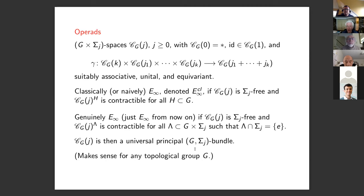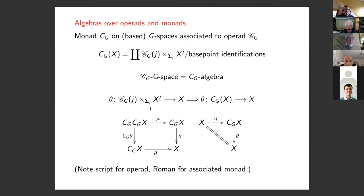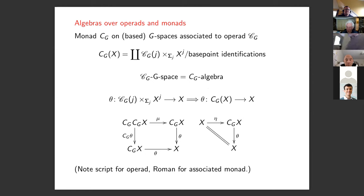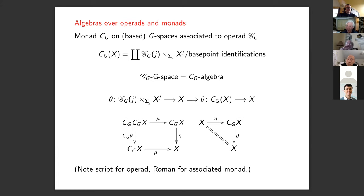This definition makes sense for any topological group G, but we'll restrict to finite groups. We have notions of operads, algebras over them, and monads. There is a monad on based G-spaces associated to any operad, given by taking equivariant orbits and modding out by basepoint identifications. G-spaces over the operad are the same as classical algebras over the associated monad. This is a very old notion of two monads.